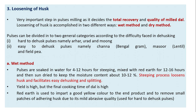Red earth is used to impart a good yellow color to the end product and to remove small patches of adhering husk due to its mild abrasive quality.